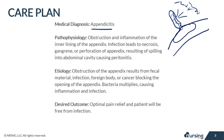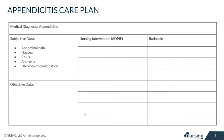Our desired outcome is optimal pain relief, and the patient will be free from infection. Now let's look at our care plan, starting with the subjective data. Your patient might be experiencing abdominal pain, especially in that right lower quadrant where the appendix is located, due to the inflammation and possible rupture of the appendix.